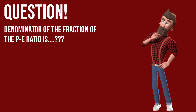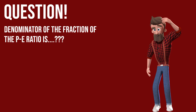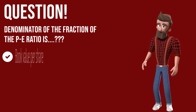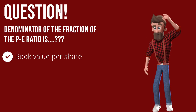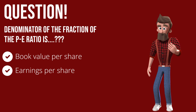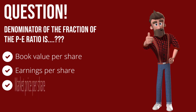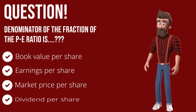Question: The denominator of the fraction of the P/A ratio is? Here are the options. A: Book value per share. B: Earnings per share. C: Market price per share. D: Dividend per share.